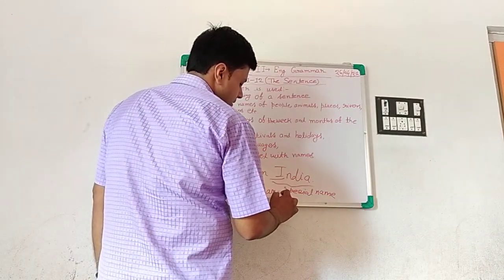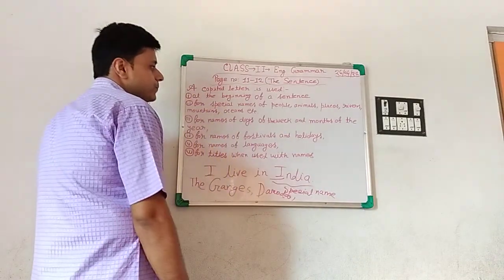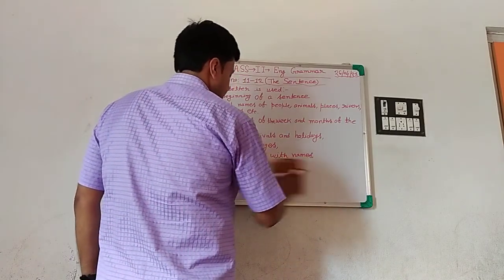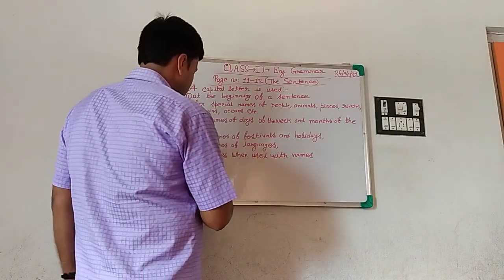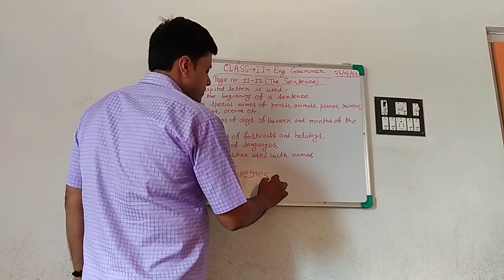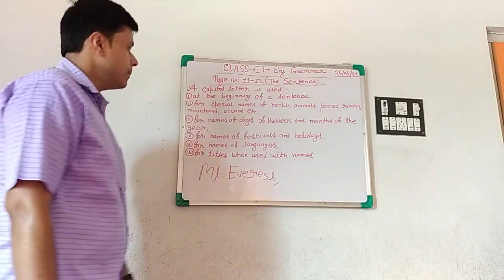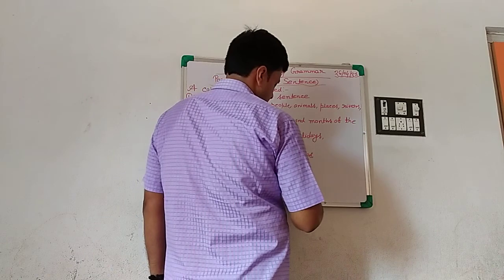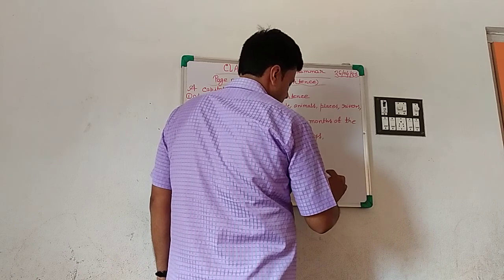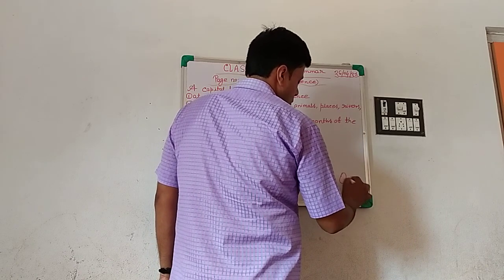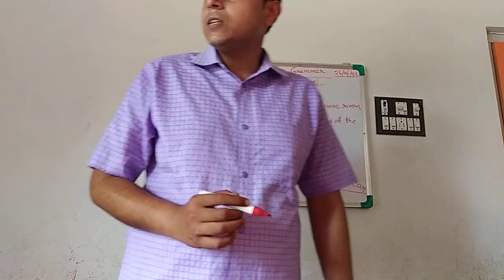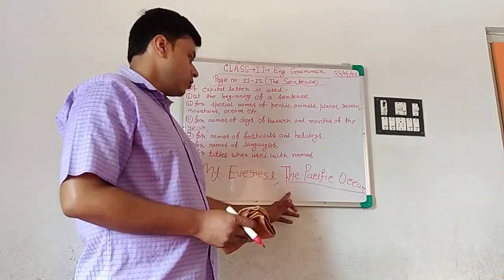Also rivers like Damodar are special names. Mountains — the name of a mountain is also a special name. For example, Mount Everest is a special name. And for oceans, the Pacific Ocean is also a special name. So we use capital letters for names of places, rivers, mountains, and oceans.